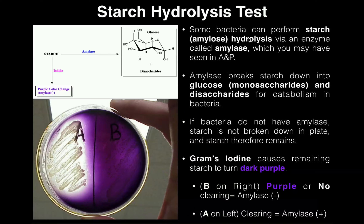Some bacteria can perform what's called amylose hydrolysis or starch hydrolysis. One form of starch is amylose, but we'll just call it starch hydrolysis. And the way that they're actually able to do this is using an enzyme called amylase.